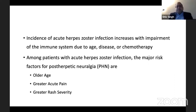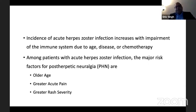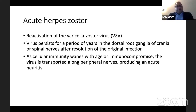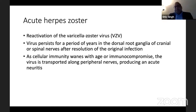The major risk factors for post-herpetic neuralgia are old age, patients who have greater acute pain with herpes zoster infection, or patients with greater rash severity. The herpes zoster (varicella zoster) virus remains dormant. In acute herpes zoster, there is reactivation in patients with reduced immunity or during stressful times. This virus can persist for years in the dorsal root ganglia of cranial as well as spinal nerves — that's why you see trigeminal division involvement.